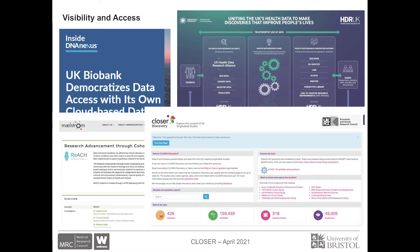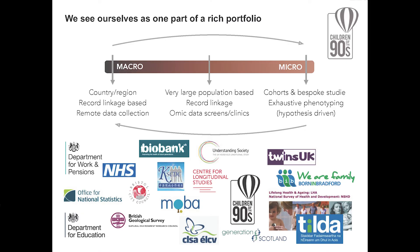Visibility and access is critical and we all know this is a changing space. UK Biobank are field-leading in the ways they're trying to democratise access to their data. A study like ALSPAC has got connections through organisations like Maelstrom to make front-end visibility better. We're part of the HDR UK alliances and proud to be part of CLOSER and CLOSER Discovery. We also see ourselves as a key part of a broader portfolio of research assets, particularly to do with epidemiology and biological and social sciences — that portfolio spans from extremely large whole-population-based initiatives all the way down to bespoke studies set up around specific hypotheses.